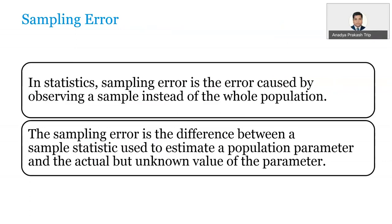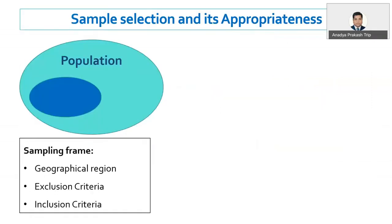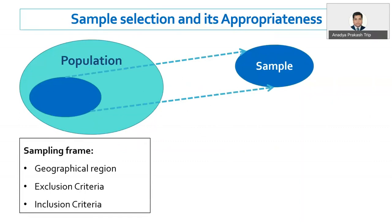There is no problem — we have understood that due to sampling we may be a little bit plus or minus from the true reality, and this is called sampling error. Now we will try to understand sample selection and its appropriateness. We are going to take a sample from the population. We have already targeted a population — we know its boundary and circumference. In most clinical research, we define the population with restrictions like geographical reasons, inclusion criteria, exclusion criteria, and other restrictions, so a population set is defined and then we take a sample from it.